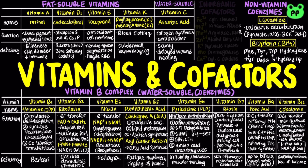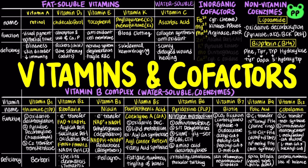Several metal cations serve as inorganic cofactors. The ferrous ion binds oxygen in heme of red blood cells and cytochrome of the electron transport chain. The magnesium cation serves as a cofactor for ATP in kinases and phosphatases. The manganese cation serves as a cofactor for arginase in arginine catabolism and ribonucleotide reductase, or RNR, which converts ribonucleotides to deoxyribonucleotides. The zinc cation serves as a cofactor in alcohol dehydrogenase in yeast and carbonic anhydrase, or CAH, during bicarbonate formation.